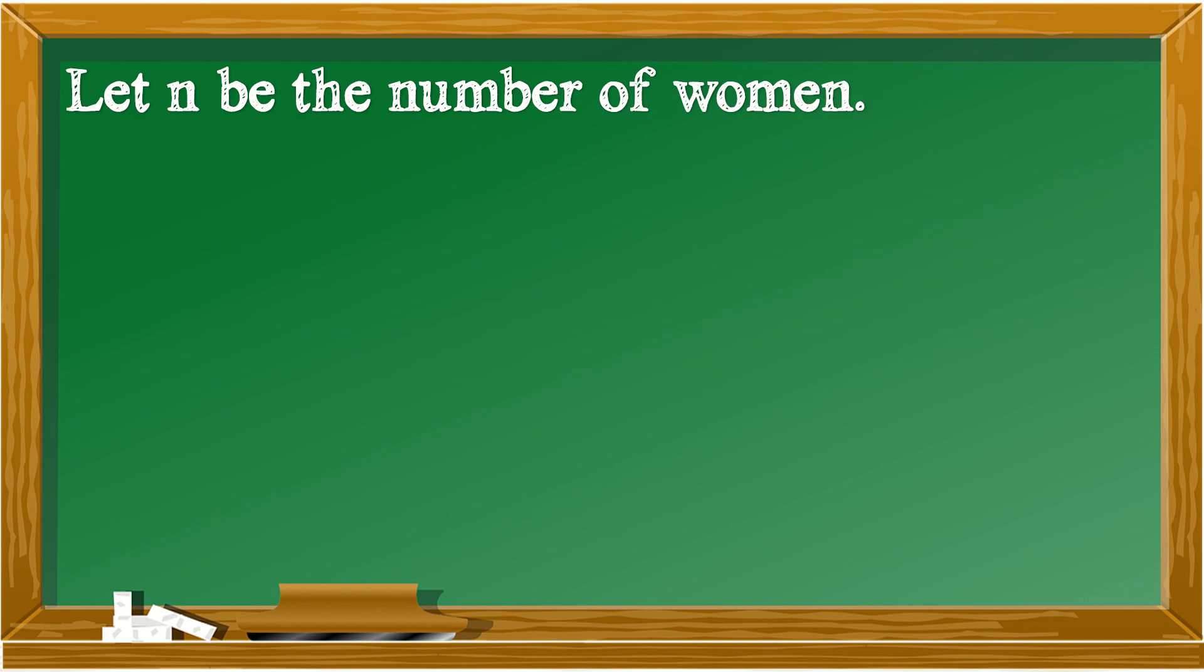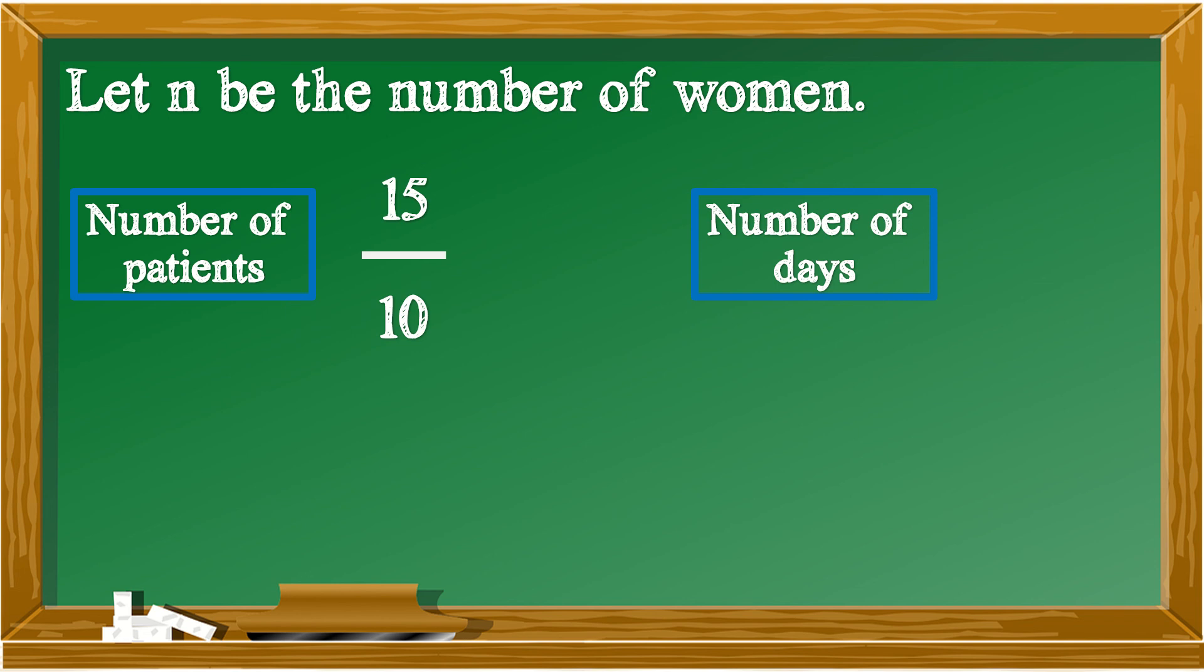Let N be the number of days. This is patient, not women. Number of patients: 15 and 10. Number of days: 6 and N. Because there is no second days mentioned, and we assume that the number of days will increase, so N is higher than 6.